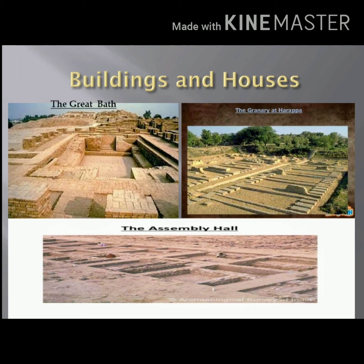These include the Great Greenery, the Great Public Path, and the Assembly Hall etc. The Great Greenery at Harappan was the most important building in the citadel. These were used to store food grains.